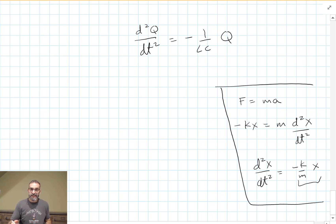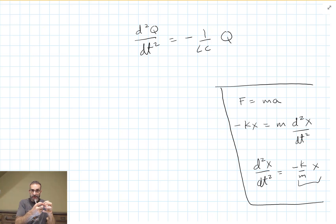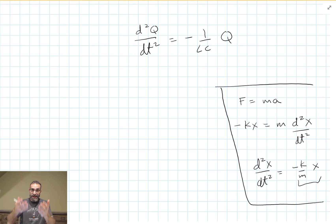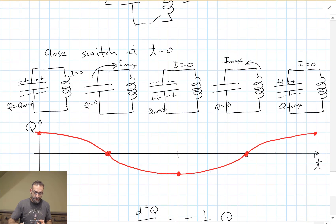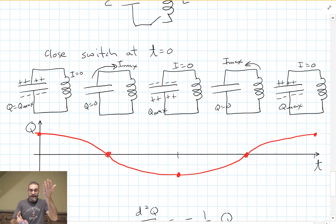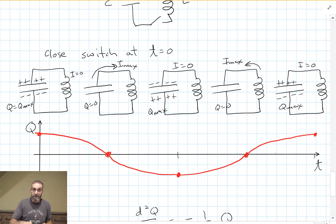This circuit is a simple harmonic oscillator. In our mass on a spring, energy went from kinetic energy of the mass to potential energy in the spring and back, oscillating forever as long as there was no friction. Here, energy is stored in the electric field of the capacitor, then in the magnetic field of the inductor, then the electric field of the capacitor, and it goes back and forth. As long as there's no resistance in this circuit, it'll oscillate back and forth like that forever — it's a simple harmonic oscillator.